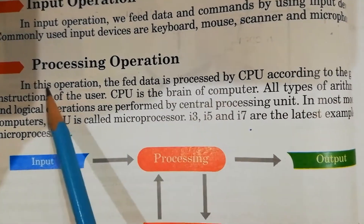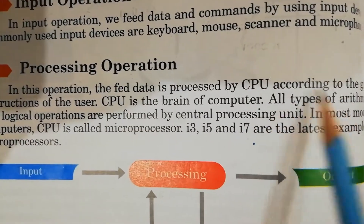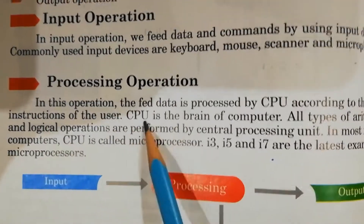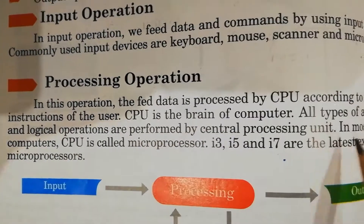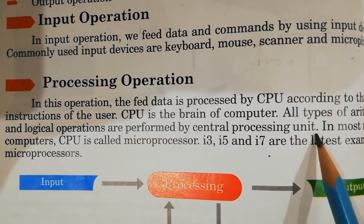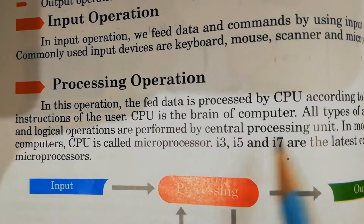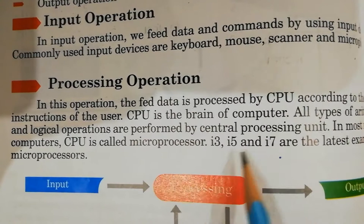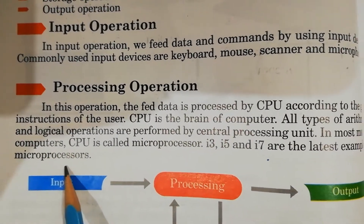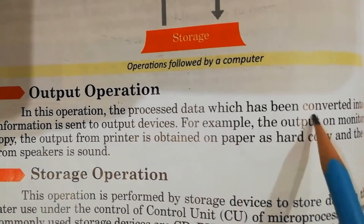Processing operation: In this operation, data is processed by the CPU according to the given instructions of the user. CPU is the brain of the computer. All types of arithmetic and logical operations are performed by the Central Processing Unit. In most modern computers, the CPU is called a microprocessor. i3, i5, and i7 are the latest examples of microprocessor.